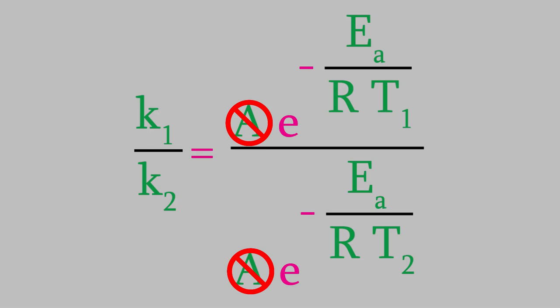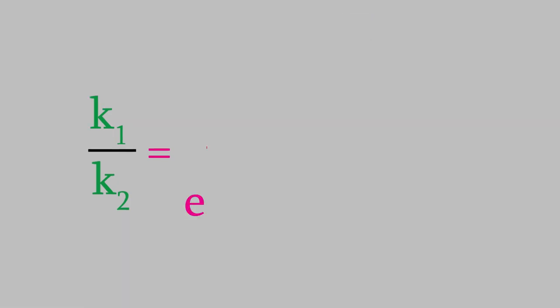First, you might know that when we have a fraction where each side of the fraction has the same number raised to a different exponent, we can simplify it by subtracting the two exponents and having the number raised to that. So, in other words, we'll have E raised to the upper exponent minus the lower exponent.